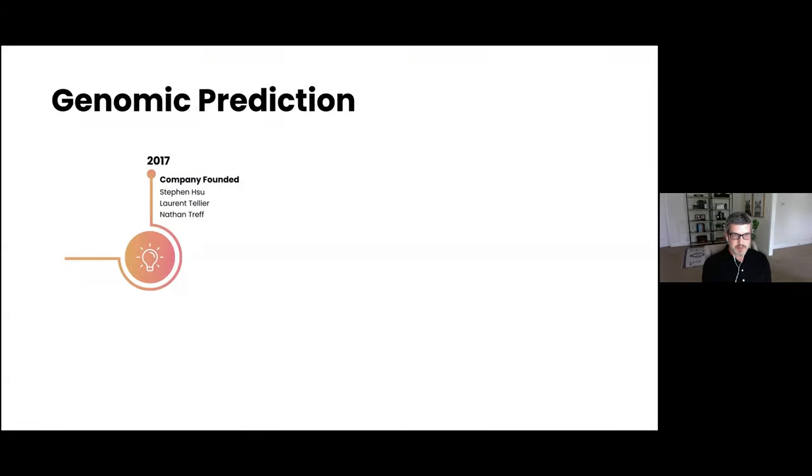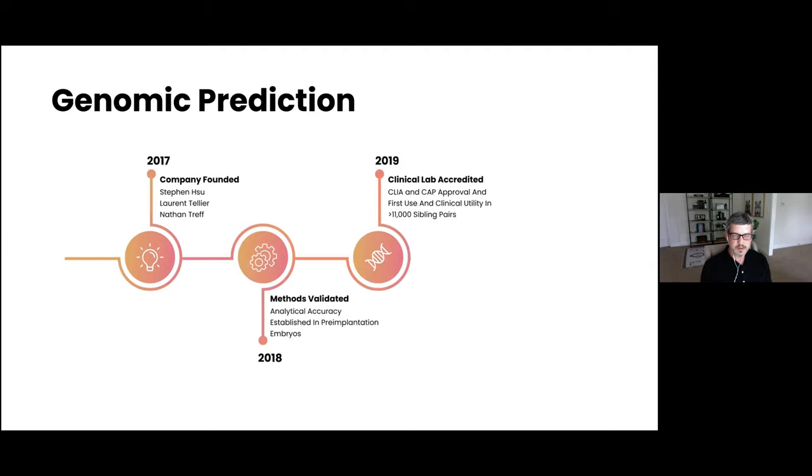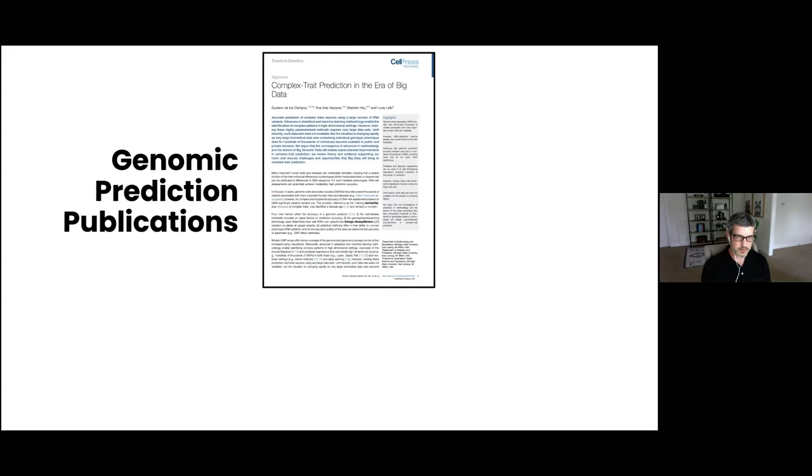To provide some background on our company, we founded in 2017—myself, Lauren Tellier, and Stephen Hsu. We spent the first year validating methodologies in the laboratory. In 2019, we received CLIA and CAP accreditation. Last year, we were providing services for over 150 IVF clinics, and we're now up to over 240.